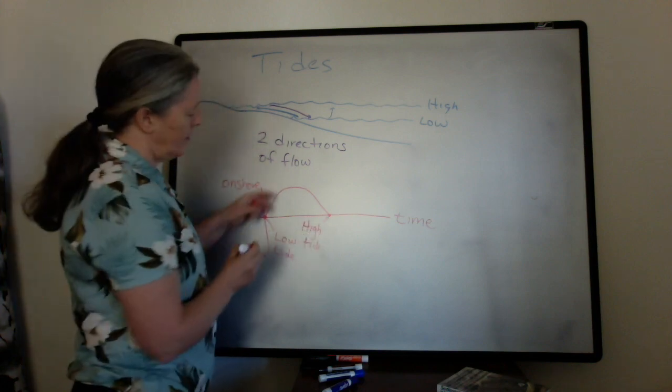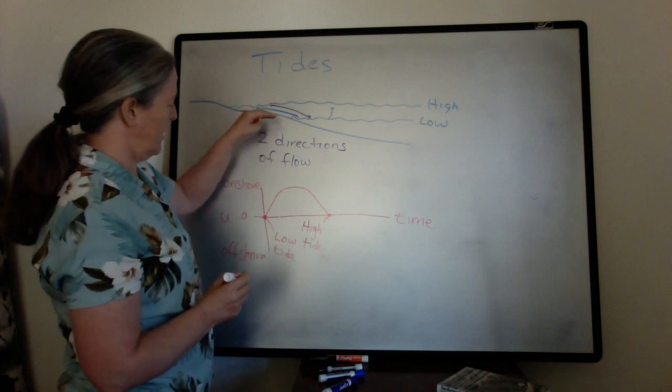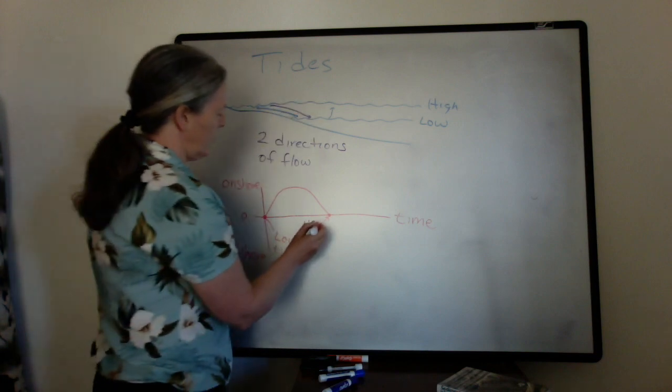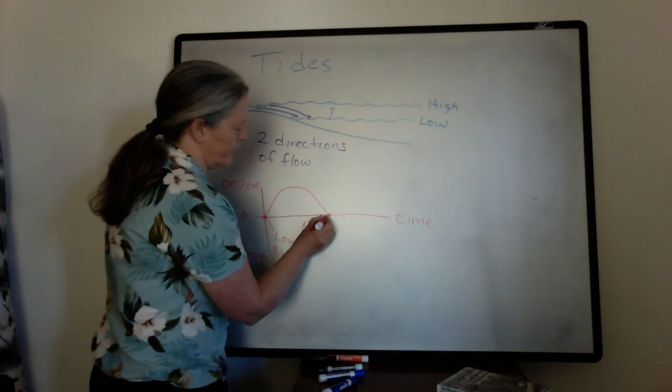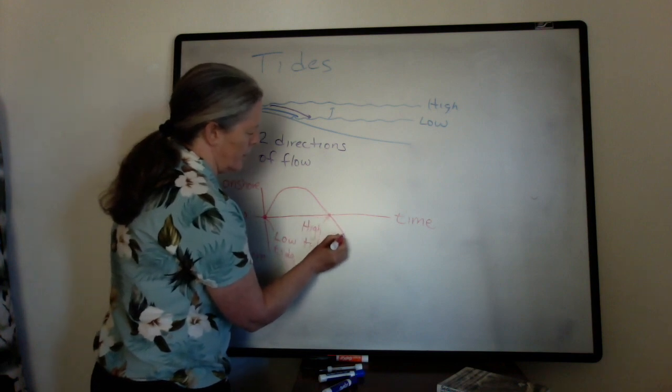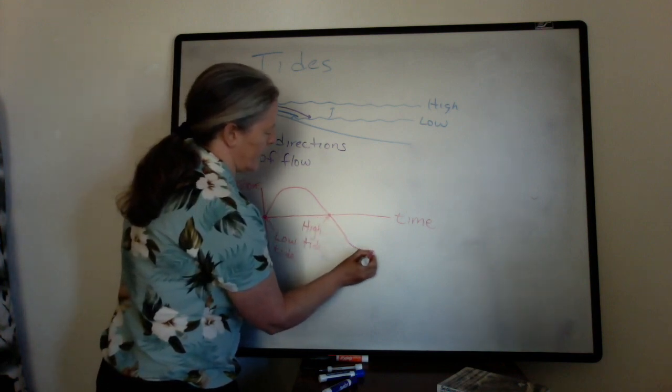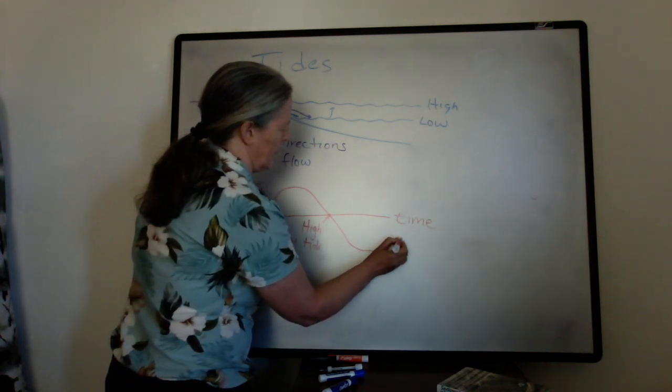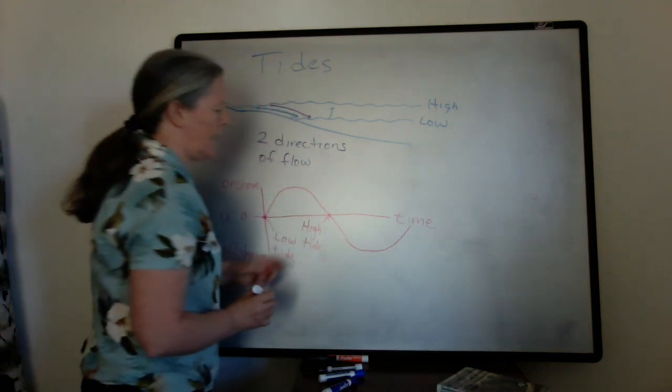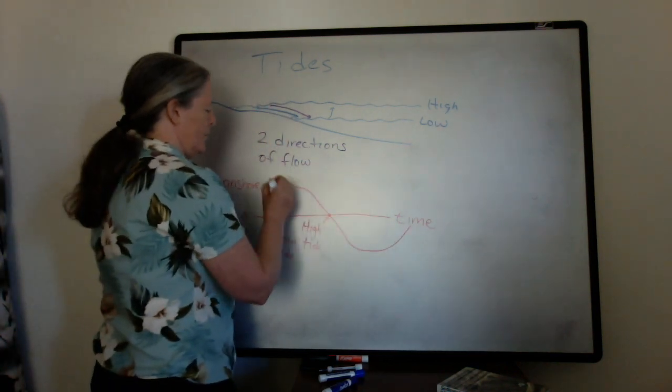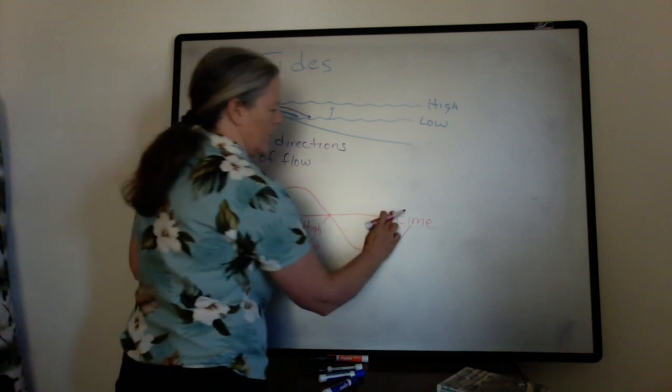Then as the tide starts to fall, you have flow in the offshore direction. It reaches a maximum speed, and then it comes back up to zero at the low tide.